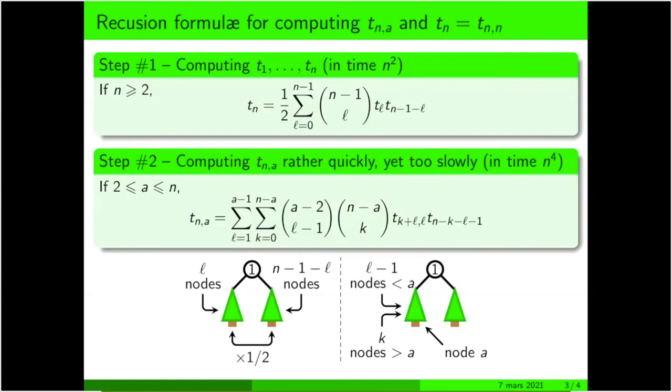In the same direction, we can compute the numbers t_{n,a}. Here, without loss of generality, if a is at least two, it goes in the left subtree.